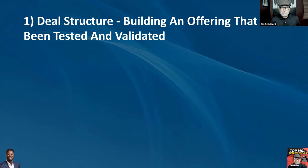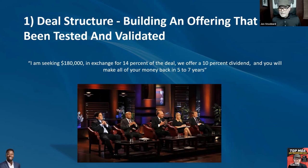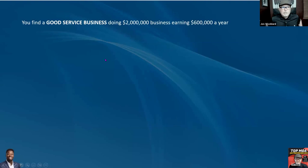Number one: deal structure — building an offer that has been tested and validated. Everybody knows Shark Tank, right? You walk through that door and the first thing you do is give your pitch. If you're trying to raise money for an acquisition, you'll say something like: "I am seeking $180,000 in exchange for 14% of my company. We offer a 10% dividend, and you will make all your money back in five to seven years." Let's unpack what that looks like.